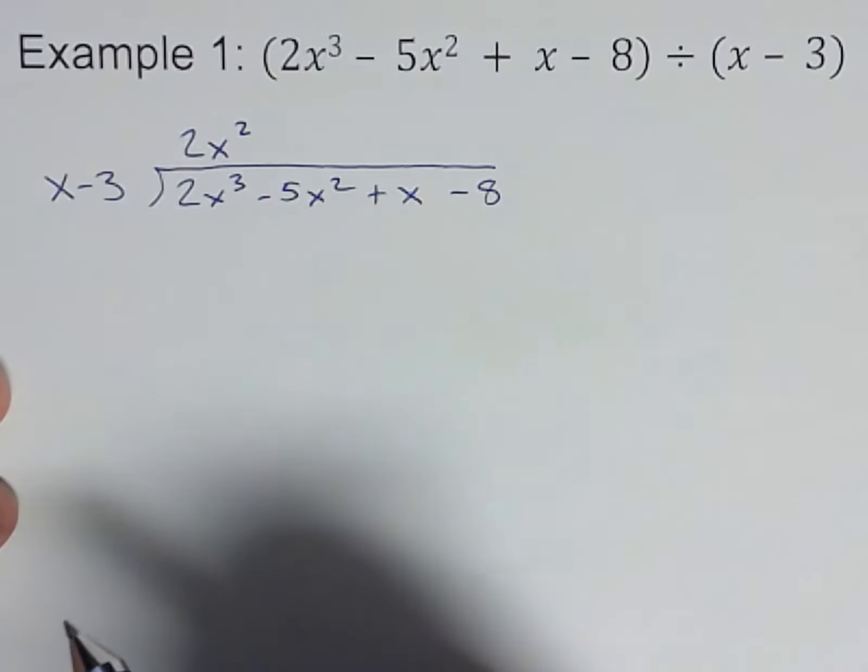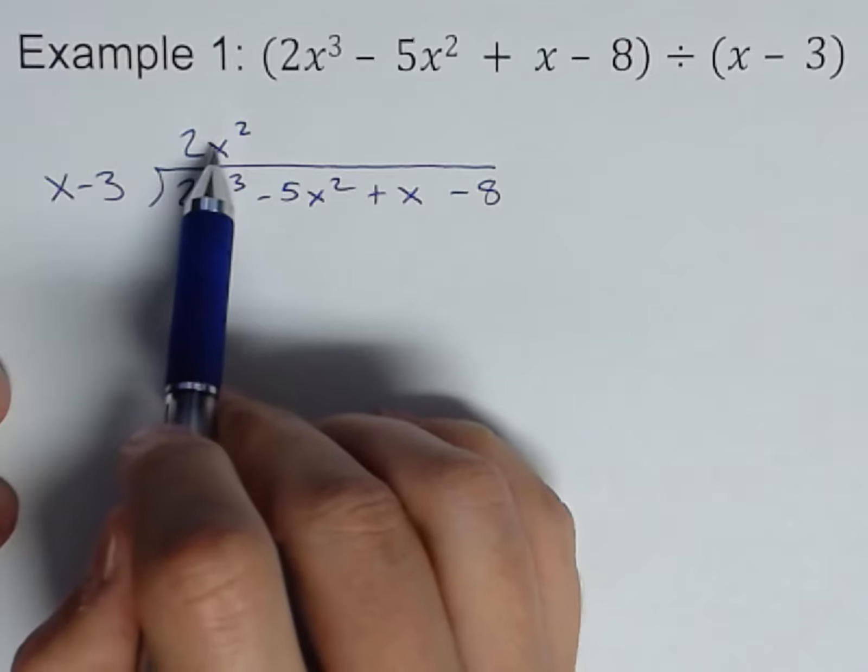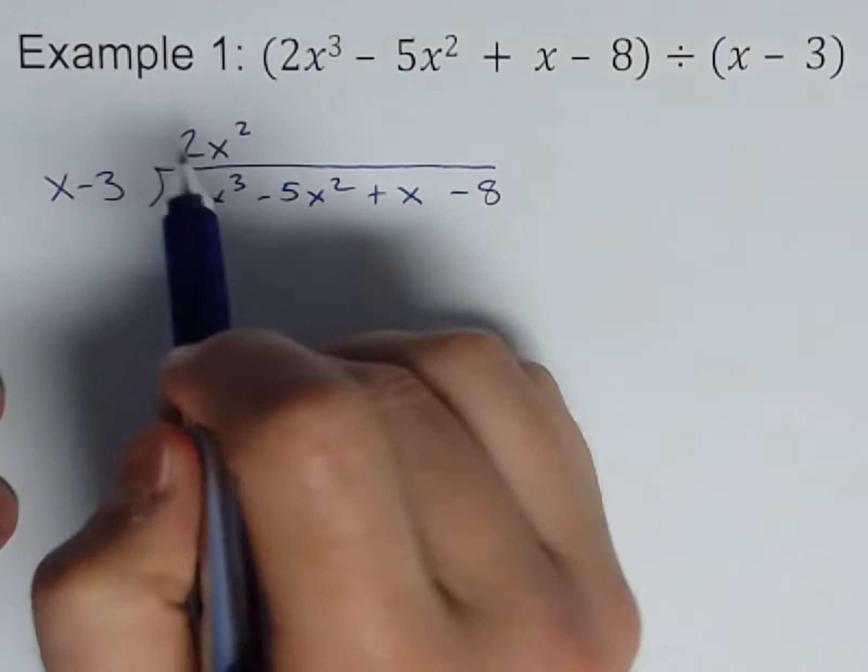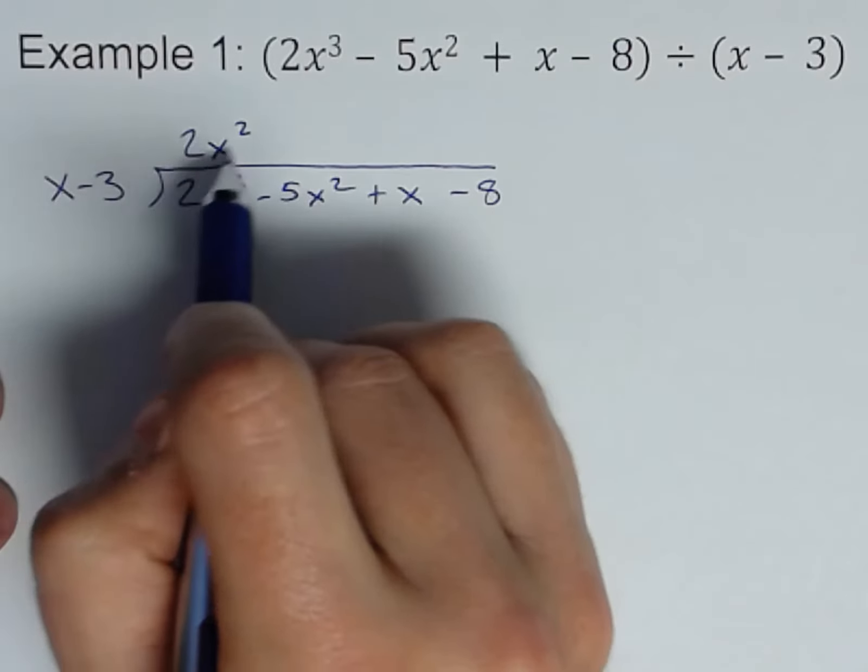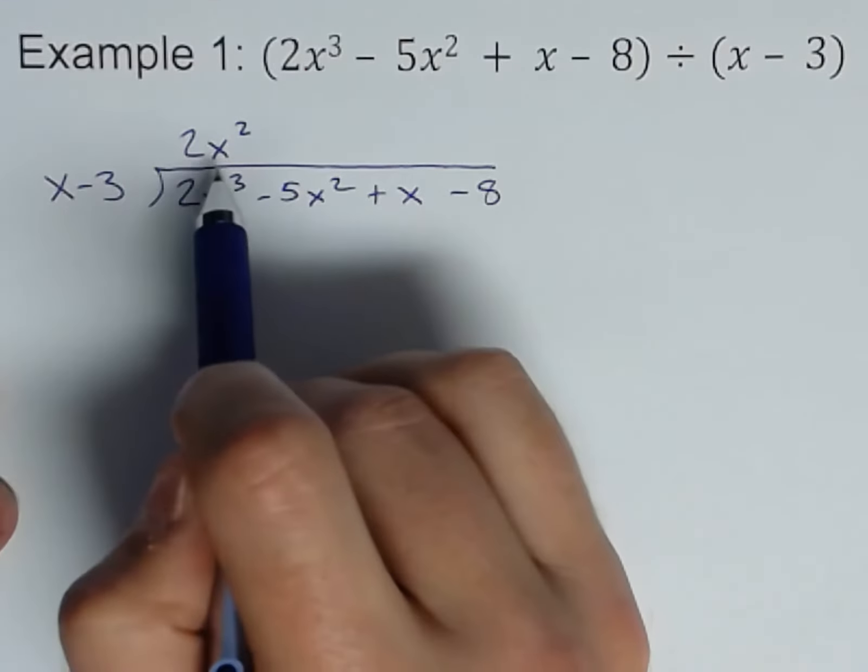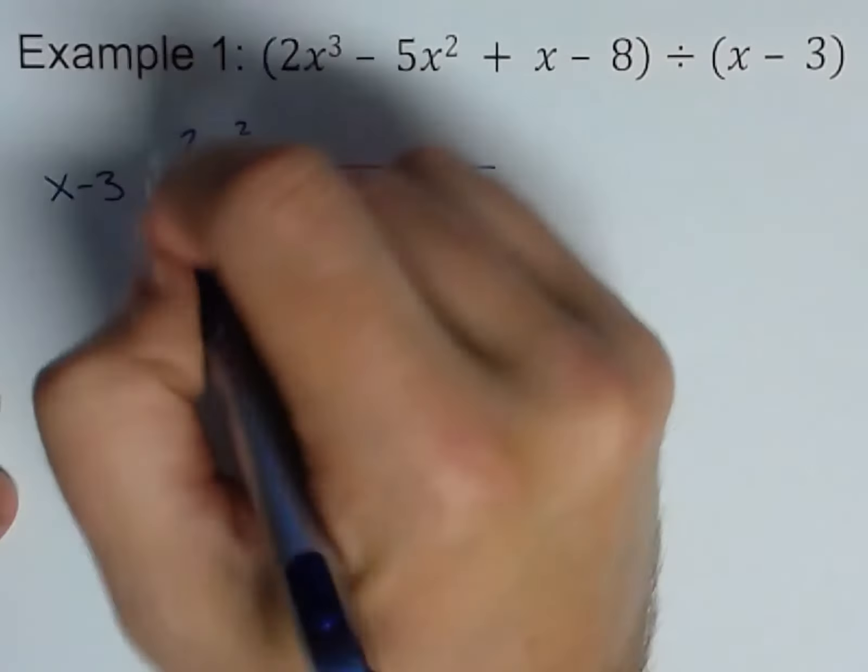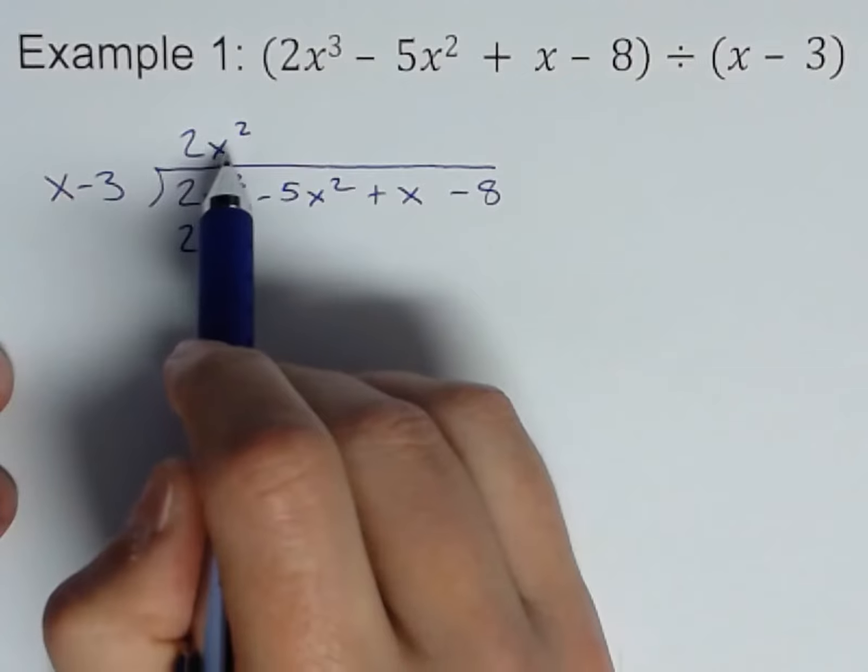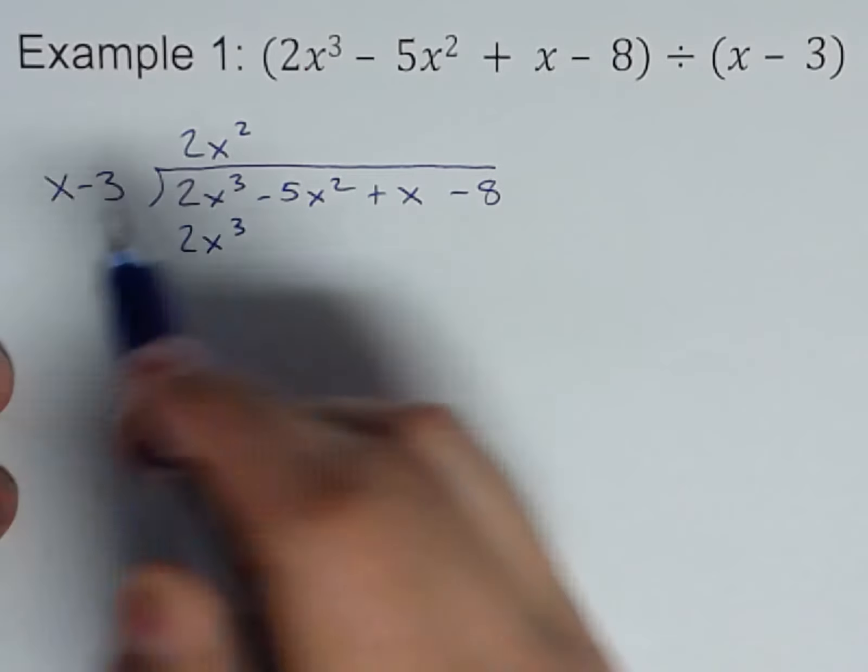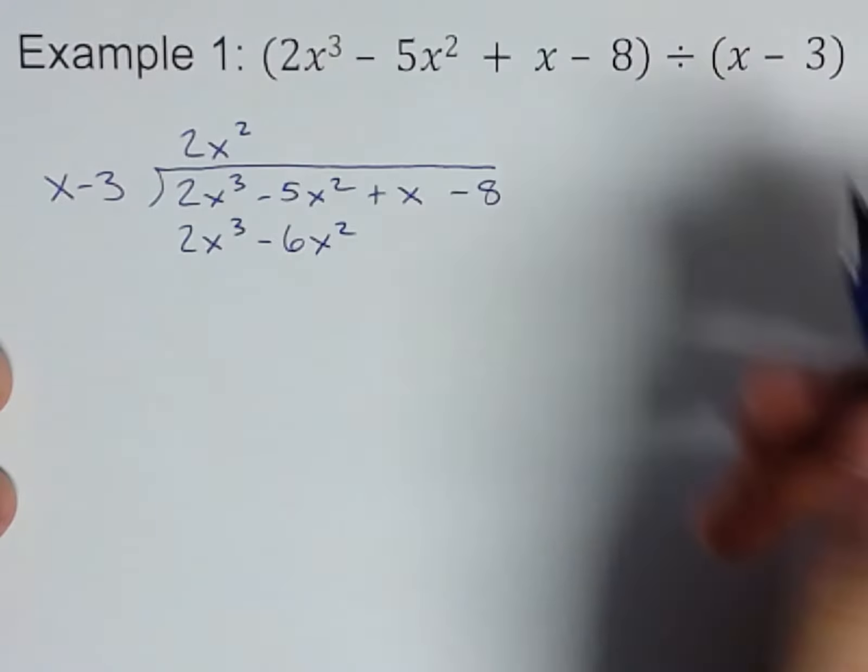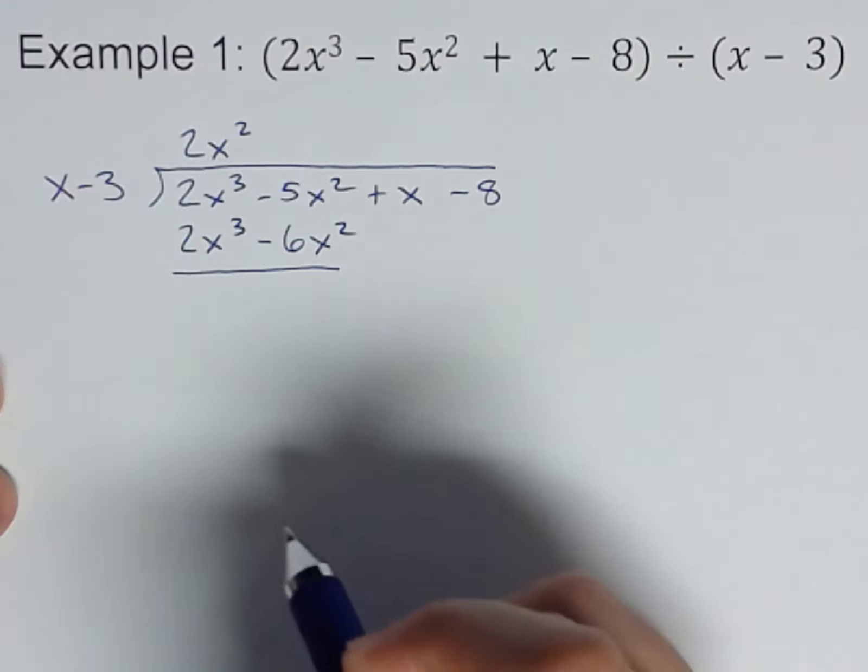I like to write it right above what I did. So if I did x times 2x², I would get 2x³. Now we're going to multiply 2x² through this whole thing, x minus 3. So 2x² times x is 2x³, of course. 2x² times -3 is -6x².